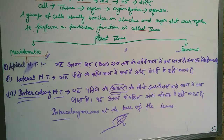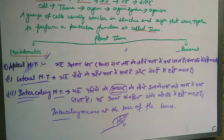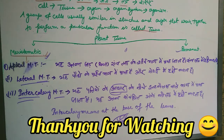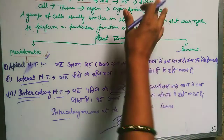Simple permanent tissue has three classifications: Parenchyma, Collenchyma, and Sclerenchyma. I hope you will understand this. You will learn more about each of these tissue types in further detail.